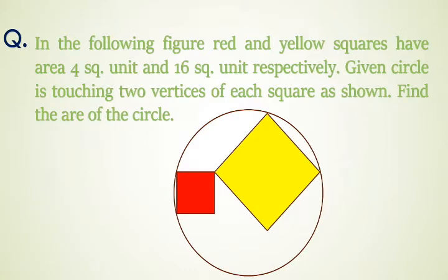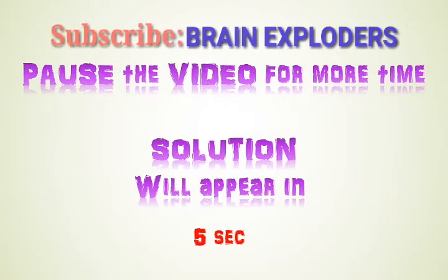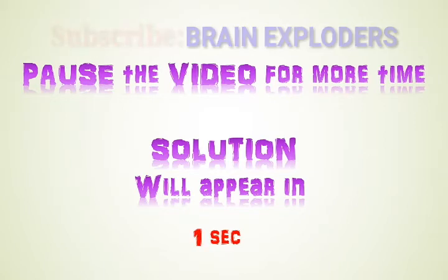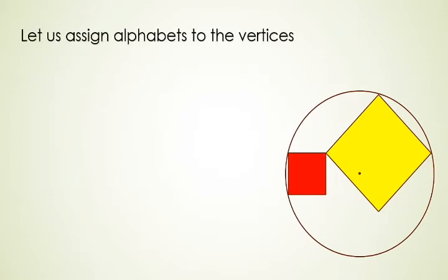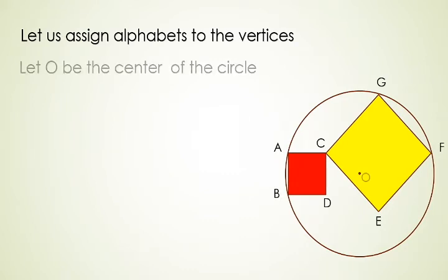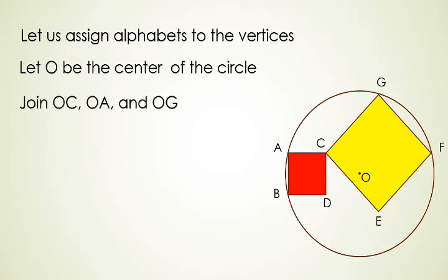If you have not read this question yet, you can pause the video for more time. So here is the solution. Let's assign alphabets to the vertices. Let O be the center of the circle. Now join O to C, A and G.